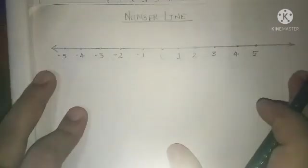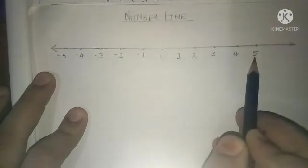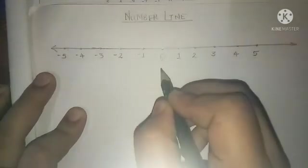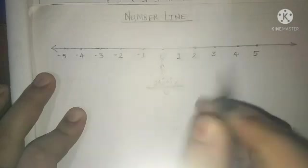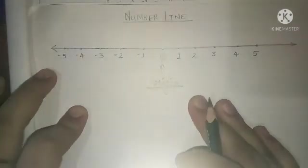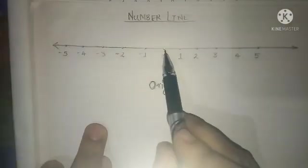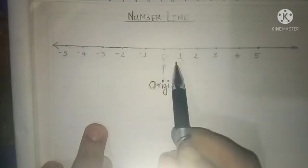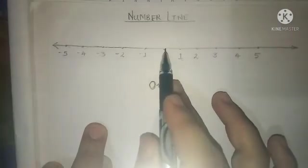On the right hand side it will be positive numbers and on the left hand side negative numbers. The 0 in between is known as the origin. Zero is known as your origin. It consists of no sign — neither negative nor positive — it is neutral and it is in between your number line.